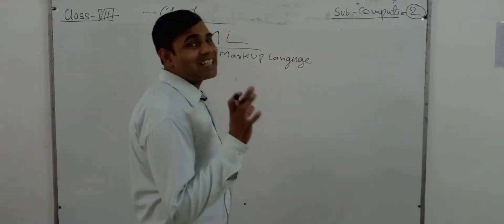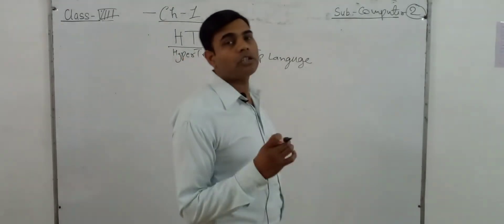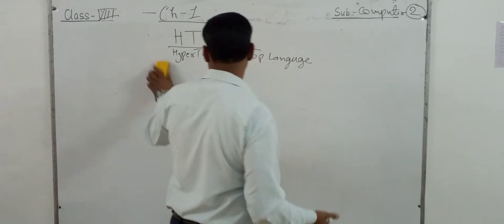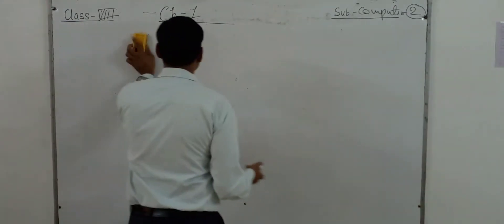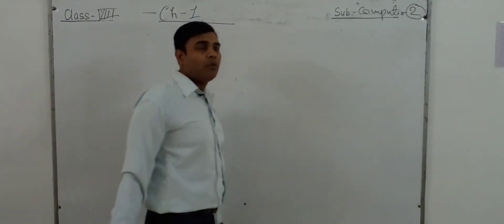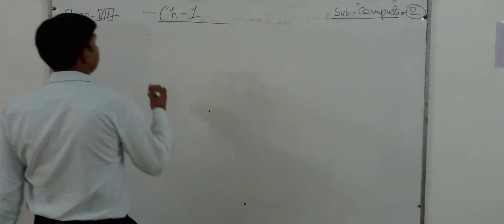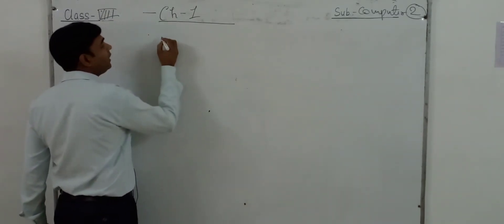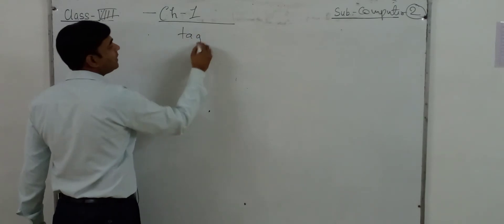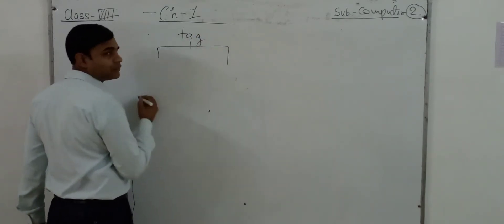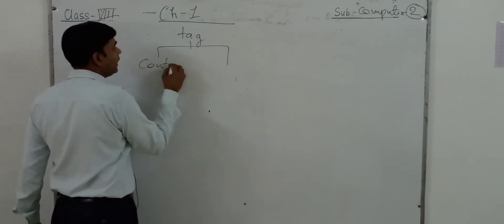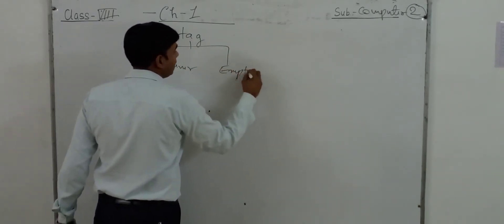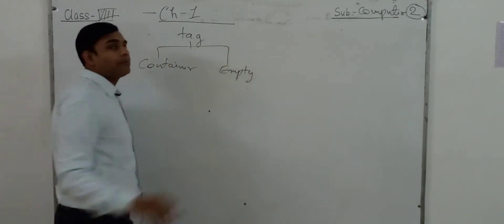Web pages are the basic building blocks of a website. So basically this language is used for making websites. HTML is a tag-based language and two types of tags are there: container tags and empty tags.